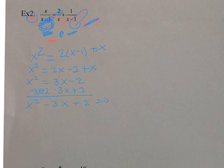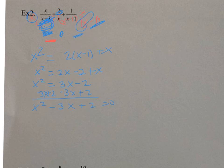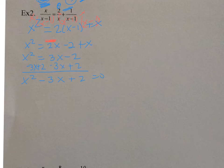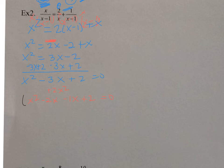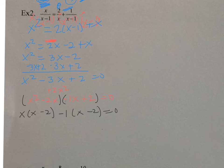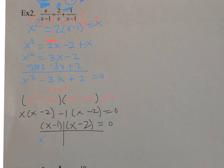Now I'm going to solve this using the master product - multiply the first times the last. So x squared times 2 is positive 2x squared. What numbers multiply to 2 and add to 3? That would be 2x and 1x, and they're both negative - that's how I get my negative 3x. Bring down the 2, bring down the x squared, and now group and factor. The GCF is x times x minus 2. I have a negative inside the parentheses, so negative 1 is the GCF times x minus 2. So my factors are x minus 1 times x minus 2 equals 0. We do our t-chart and get x equals 1 and x equals positive 2.